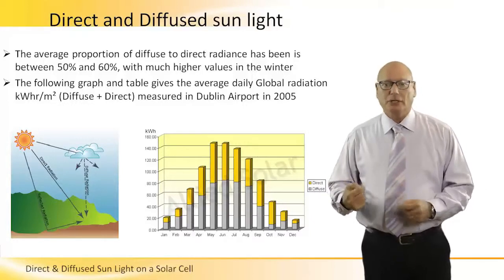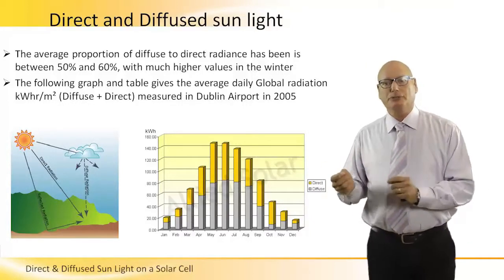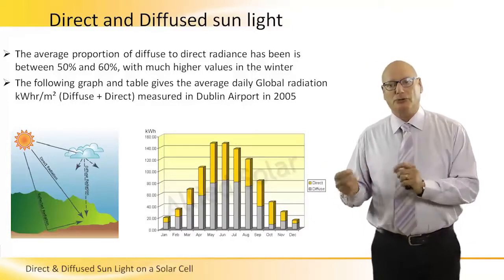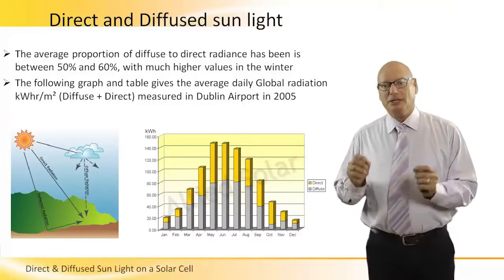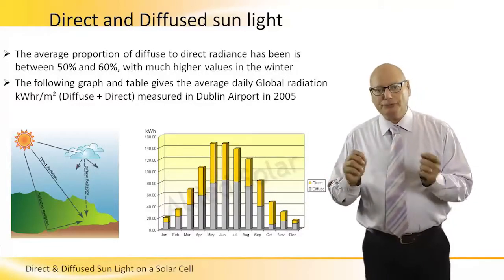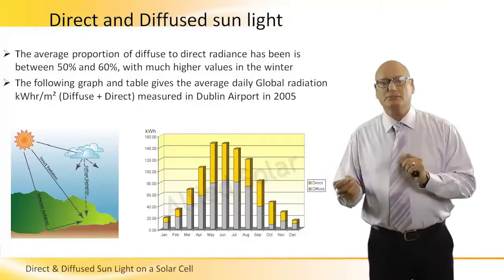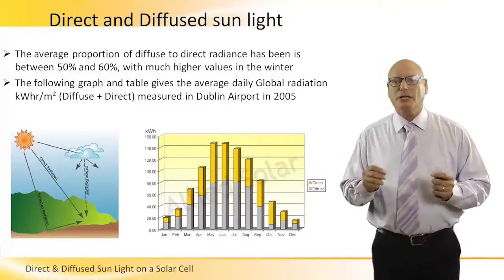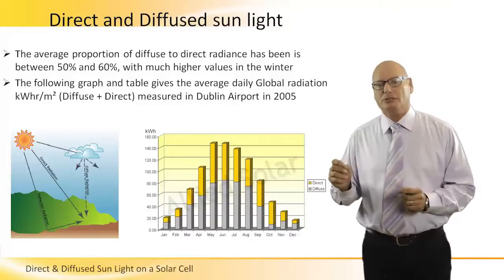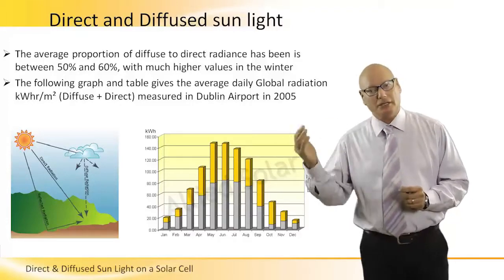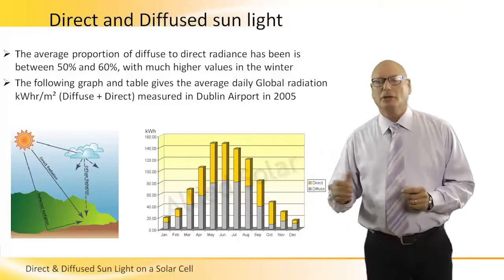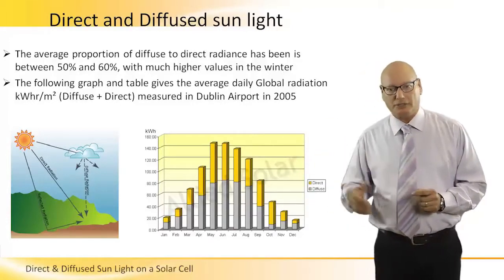The average proportion of diffused to direct radiance has been between 50 to 60%, with much higher values in the winter. We will explain later why in the winter.